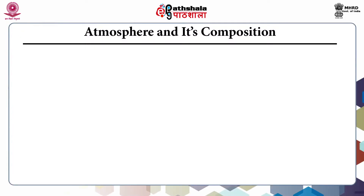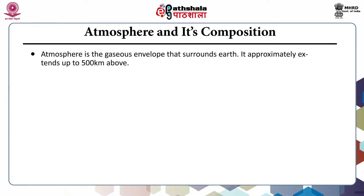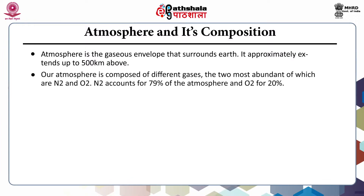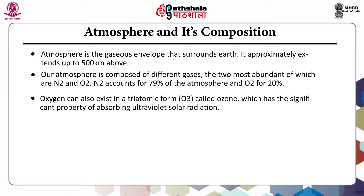Atmosphere and its composition. The atmosphere is the gaseous envelope that surrounds the earth, extending approximately 500 kilometers above. It is composed of different gases. The major ones are nitrogen and oxygen. Nitrogen accounts for nearly 78% of the atmosphere and oxygen for 21%.